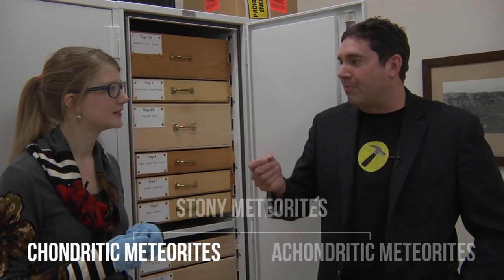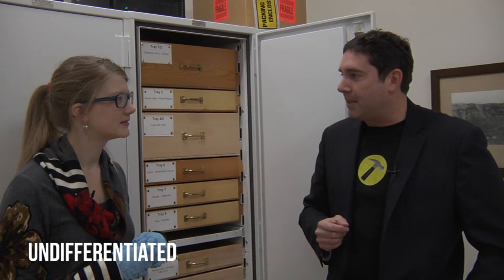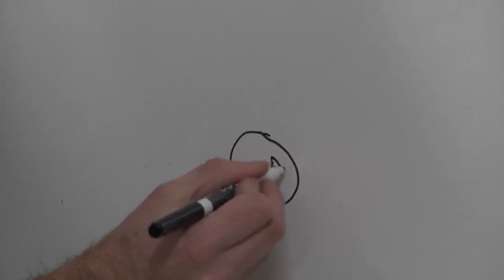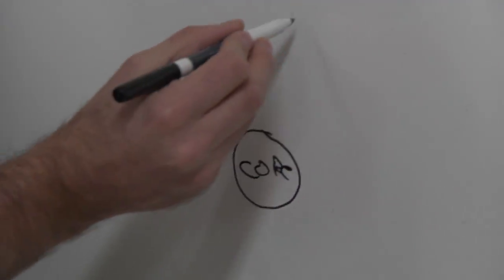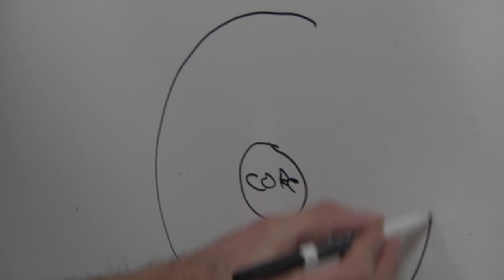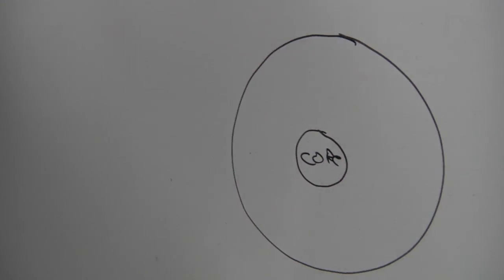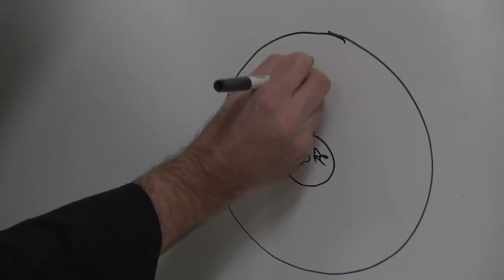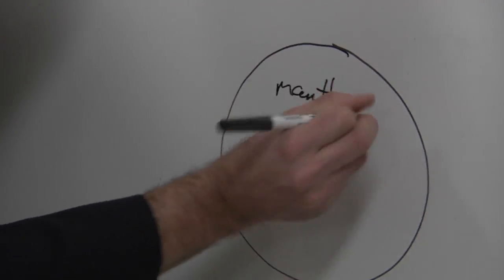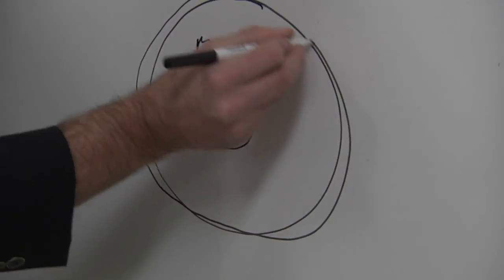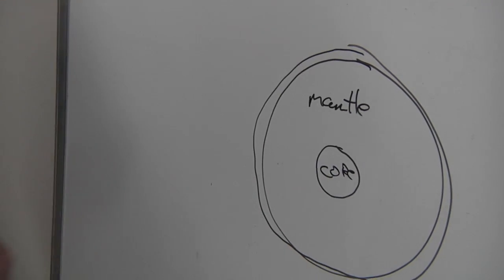Chondritic meteorites are from planetary bodies that are undifferentiated. So let's go to the board. In the middle of the Earth you have the core. Outside the core you have the mantle. And on the outside, the very thin layer, we call that the crust. So core, mantle, crust — that's a differentiated body.